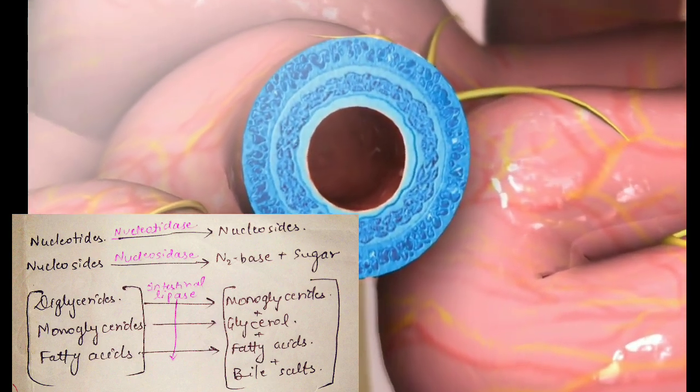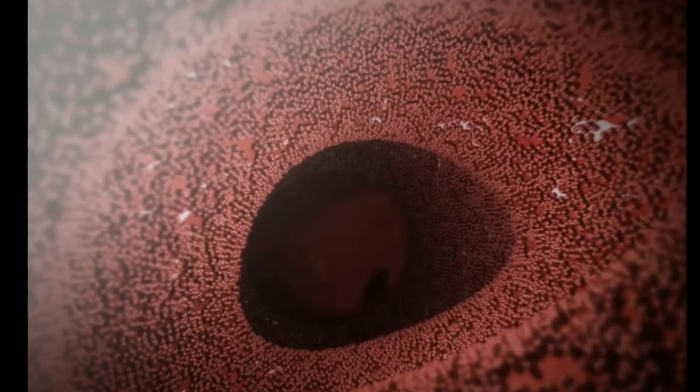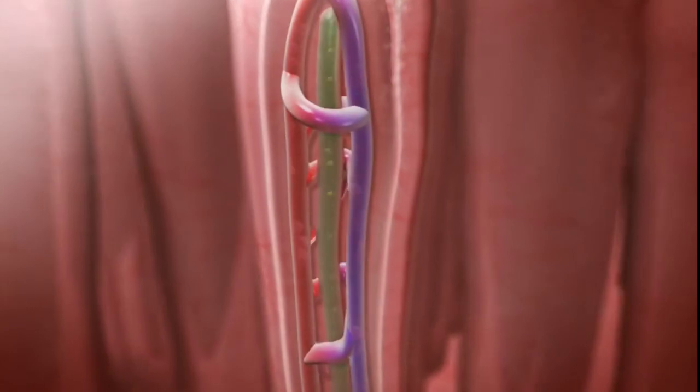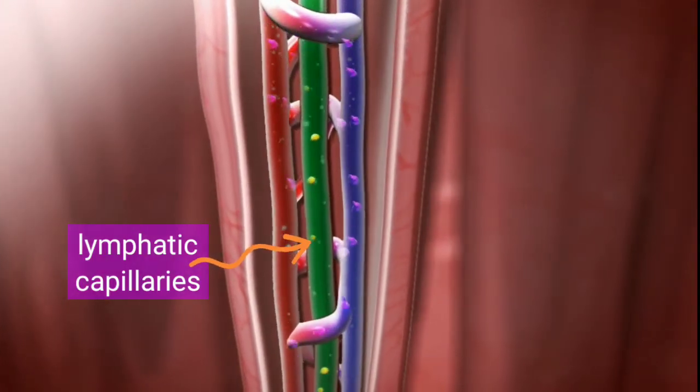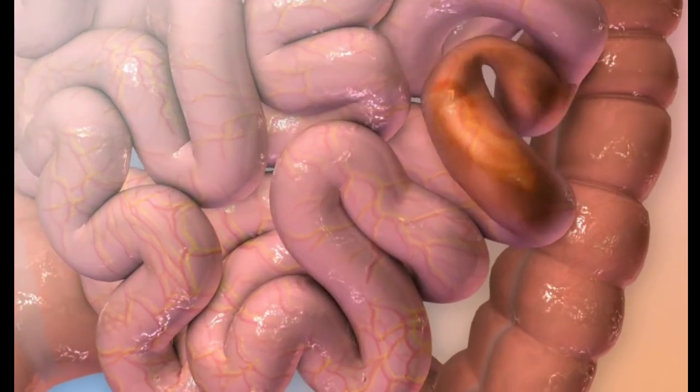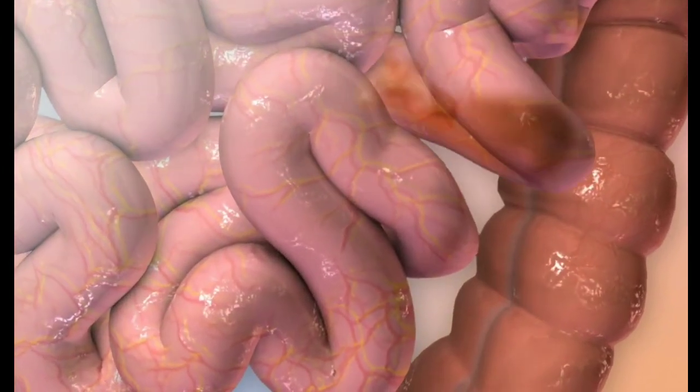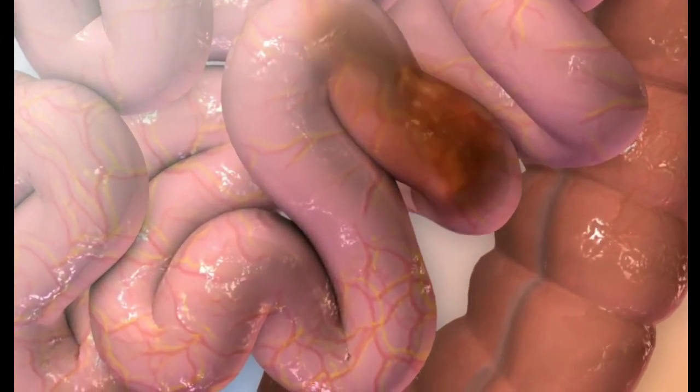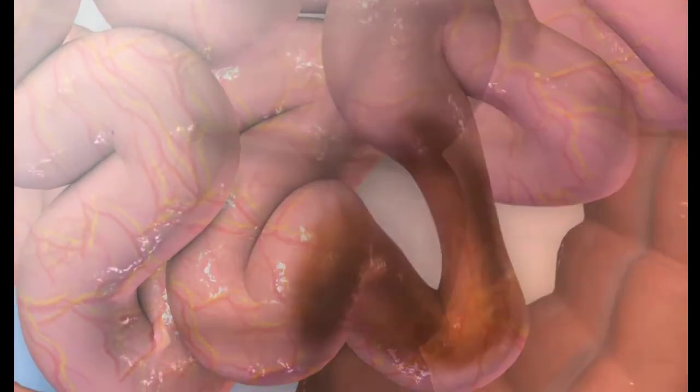These emulsified fats first get absorbed by the gut epithelial cells, and then in those epithelial cells they combine with chylomicrons and then get absorbed into the lymphatic capillary. Our body actually needs triglycerides, but it is broken down more to get absorbed because it cannot be absorbed directly. Maximum absorption occurs in the jejunum and ileum regions of the small intestine, but most drugs and alcohols get quickly absorbed in the mouth and stomach itself.